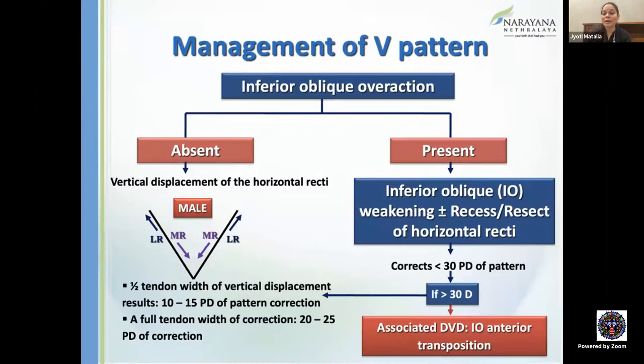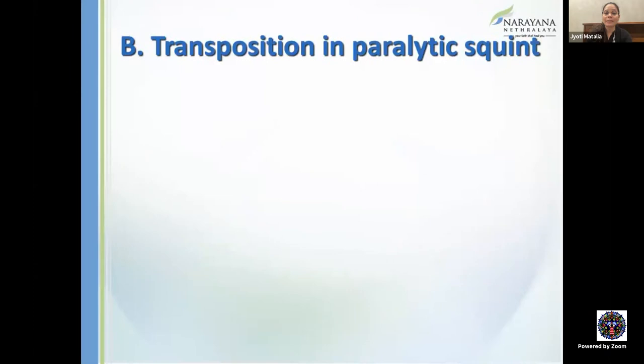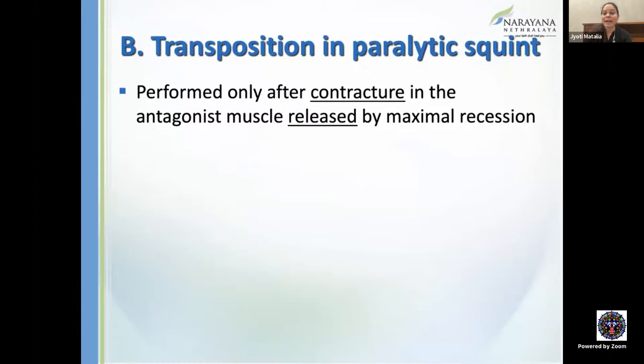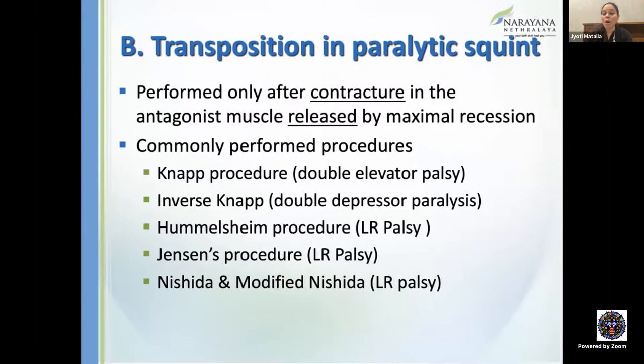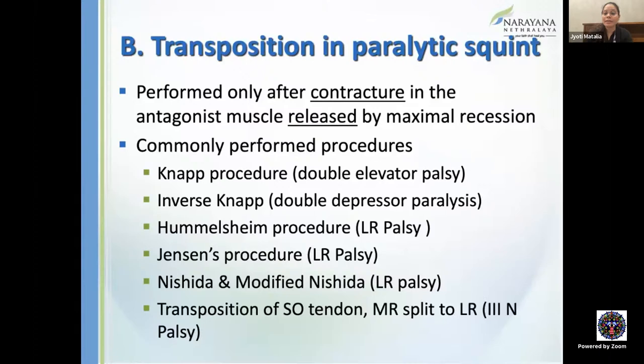Transposition in paralytic squint is performed only after the contracted antagonist muscle is released by maximal recession — directly doing a transposition without releasing contracture will not help. Commonly performed procedures include: NAPS (double elevator palsy), inverse NAPS (double depressor palsy), Hummelsheim's (LR palsy), Jensen's procedure, Nishita and modified Nishita (all for sixth nerve palsy), and transposition of the superior oblique tendon or MR split to LR for third nerve palsy.